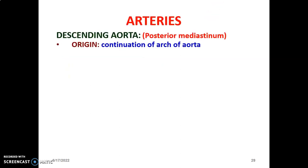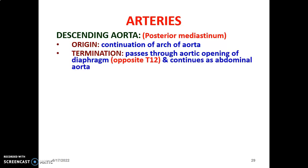From the arc of the aorta, we have the descending aorta, originating at the sternal angle of Louis at the T4-T5 junction. The first part in the posterior mediastinum is called the thoracic aorta. After passing through the aortic opening in the diaphragm, it continues in the abdomen as the abdominal aorta. The aortic opening of the diaphragm is opposite T12 vertebra. The vena caval opening is at T8, the esophageal opening is at T10, and the aortic opening is at T12.